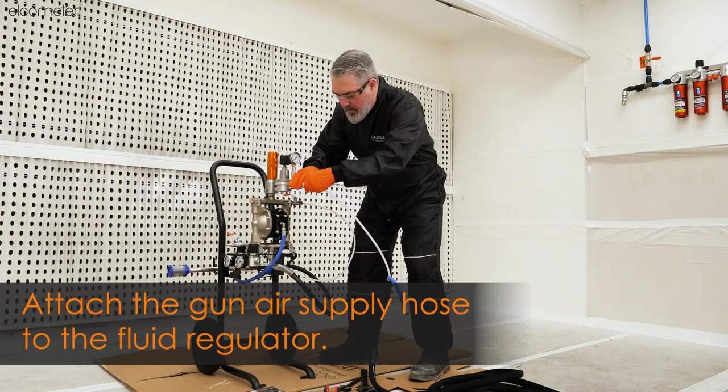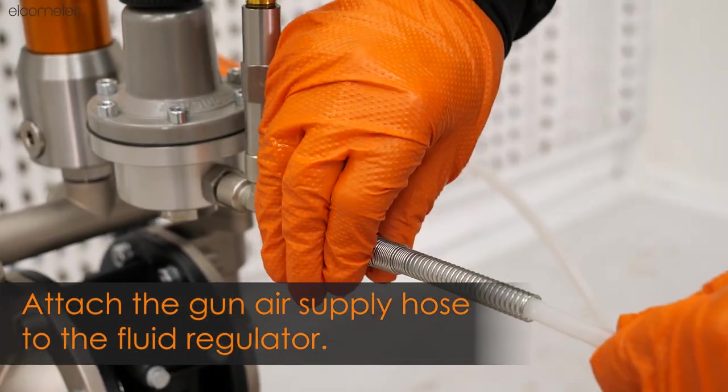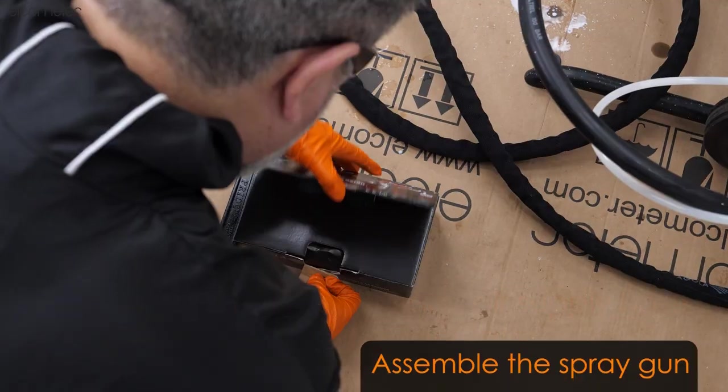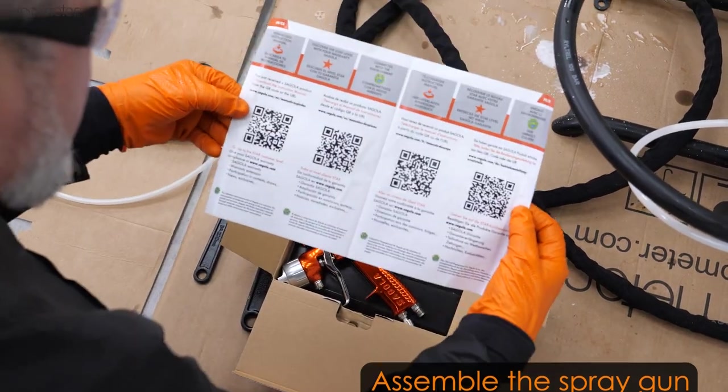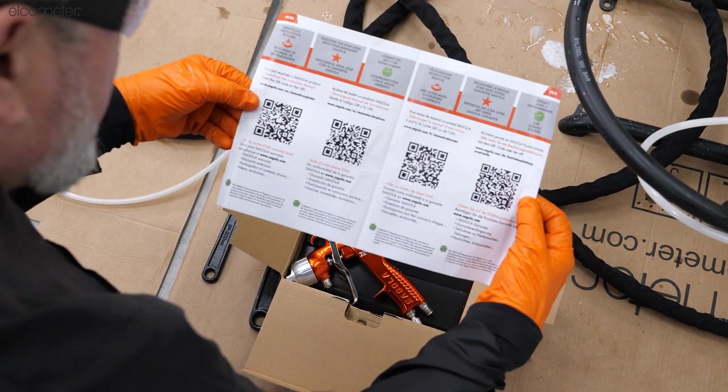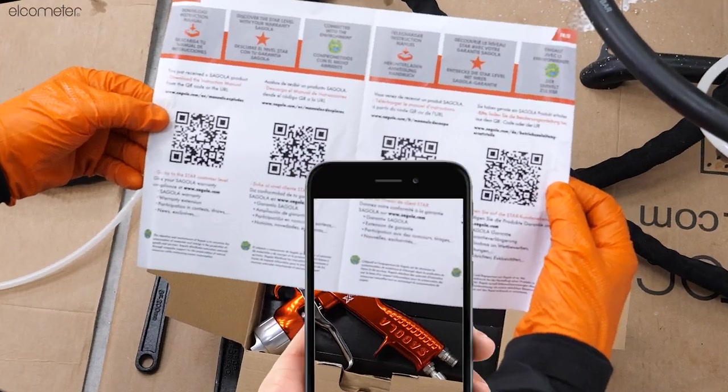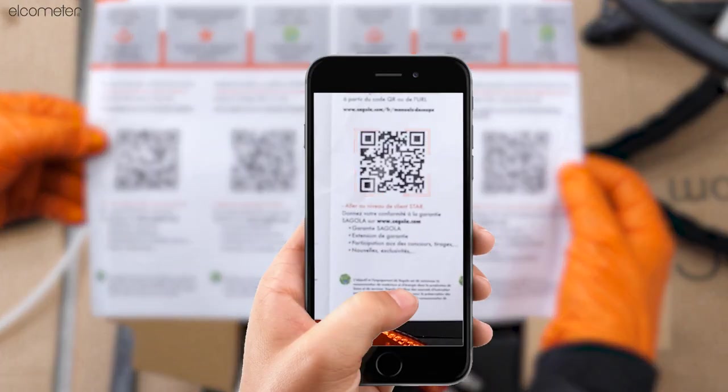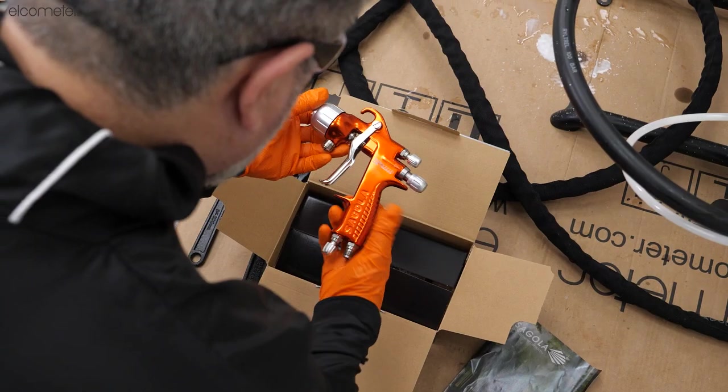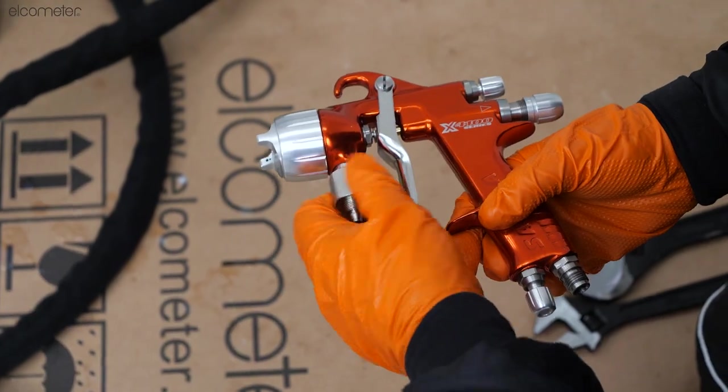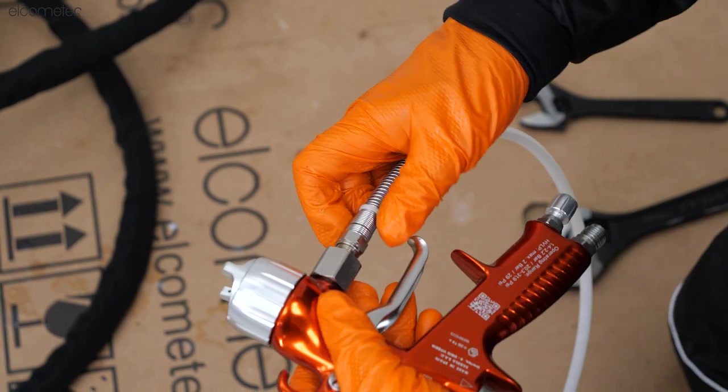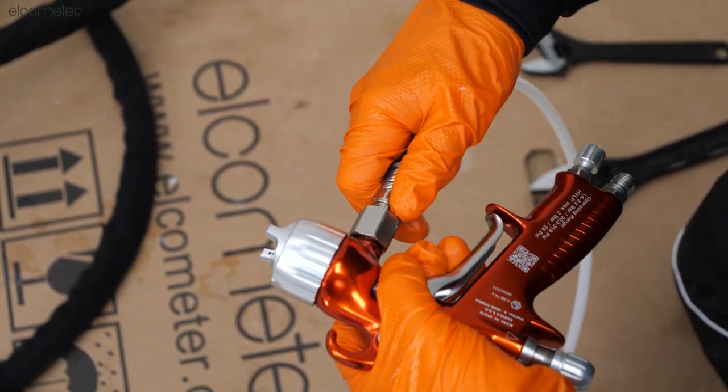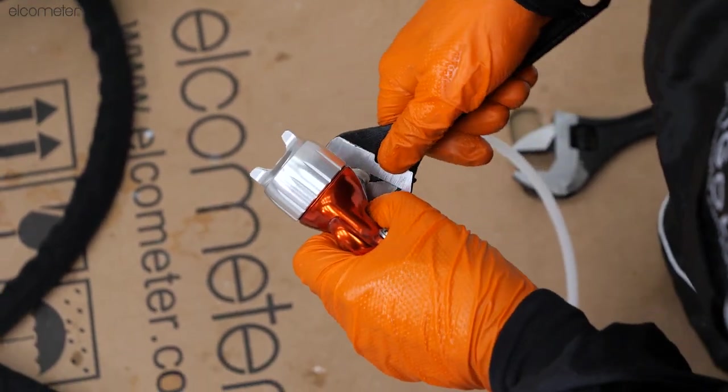Connect the gun air supply hose to the gun air regulator on the pump. Unbox the Segola X4100 spray gun. In the box there will be a leaflet containing a QR code. Scan this code to go directly to the instructions manual. Connect the fluid and air supply hoses to the gun. Hand tighten both the air and fluid hose assemblies on the gun, and then tighten further with the adjustable wrench.